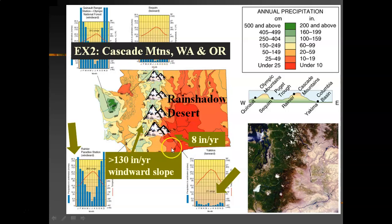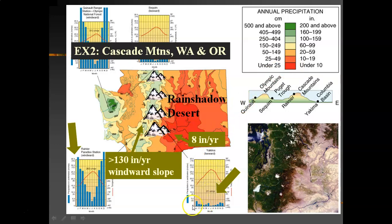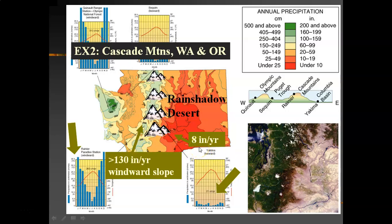On the back slopes — the eastern half of Washington and Oregon — the colors are all red, indicating less than 20 inches or under 10 inches of precipitation per year. There's a weather station in Yakima in the red zone, and the monthly bar graphs are very, very small. On average, the eastern half of Washington and Oregon receives less than 10 inches per year. The Yakima station receives about 8 inches. It really is all or nothing.